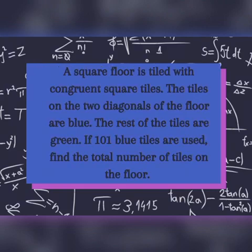A square floor is tiled with congruent square tiles. The tiles on the two diagonals of the floor are blue. The rest of the tiles are green. If 101 blue tiles are used, find the total number of tiles on the floor.